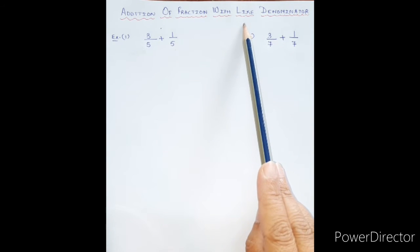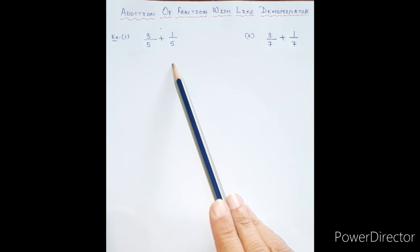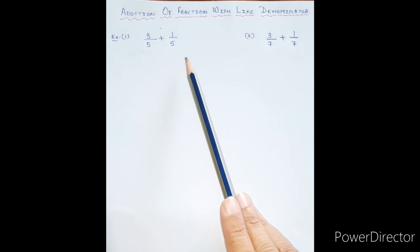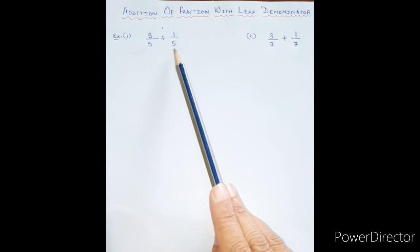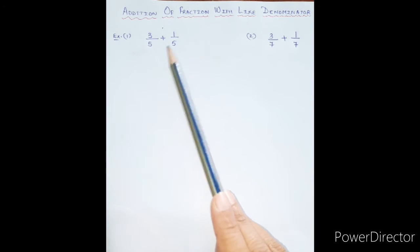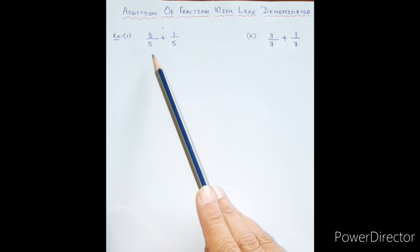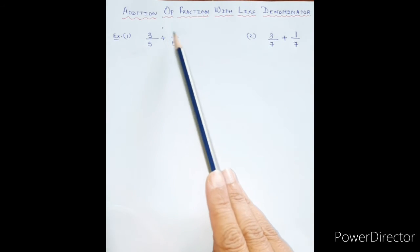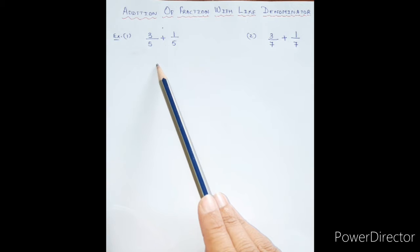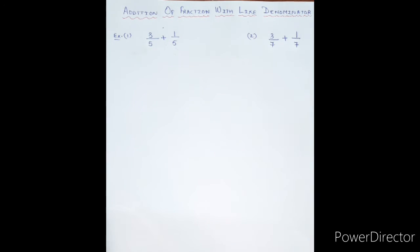Since the denominators are the same, we use the word 'like fractions.' This addition of fractions is very simple and easy, because since the denominator is the same, you don't need extra steps to do the LCM. We can directly add the numerators and just write the common denominator.